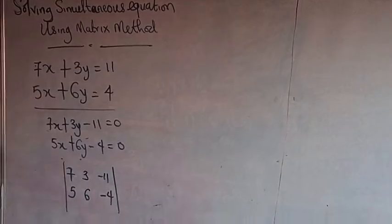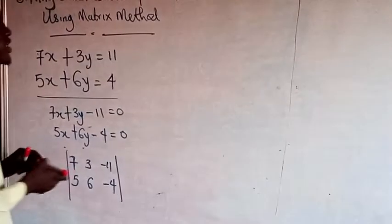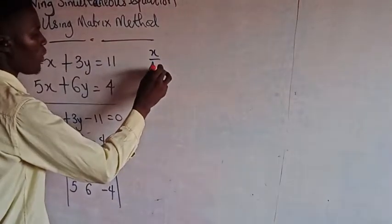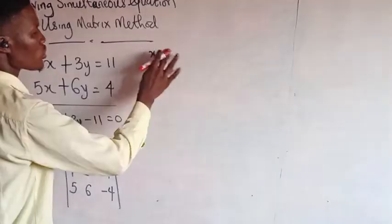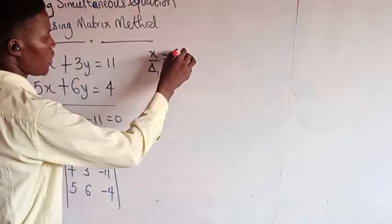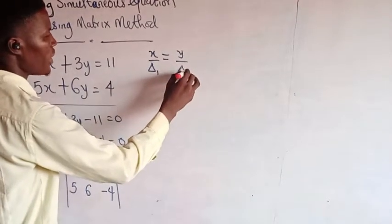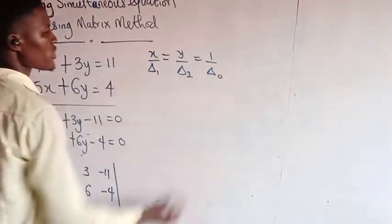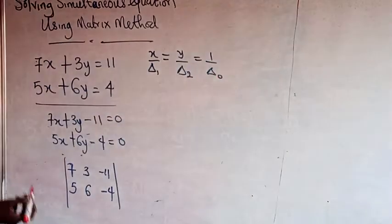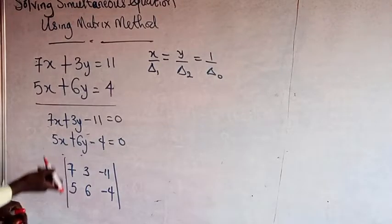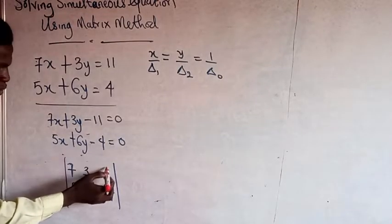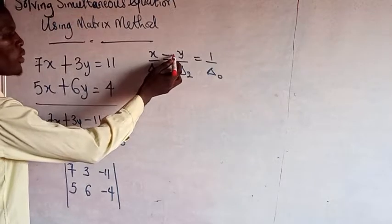Now after this, the formula we are going to be using is: x over delta 1, equals y over delta 2, equals 1 over delta naught. Now, because we are dealing with a 2 by 2 determinant matrix, the sign pattern will be plus, minus, plus. So therefore, my value is going to be negative.